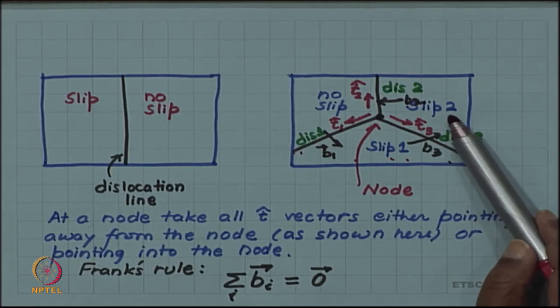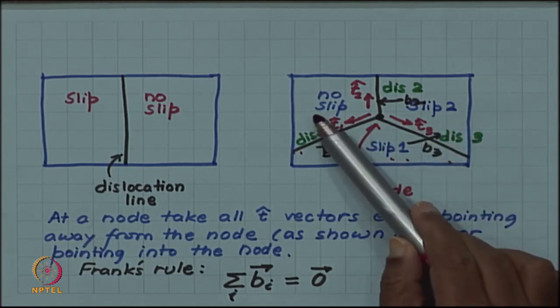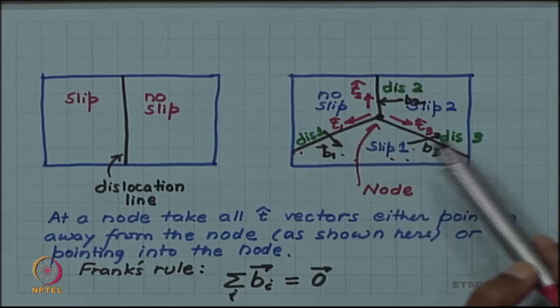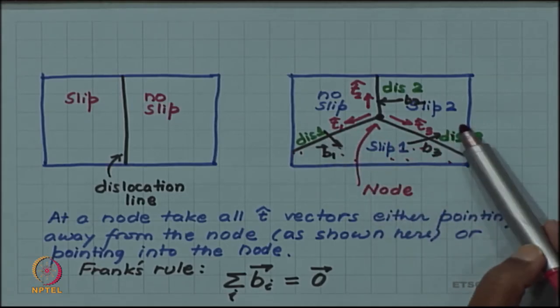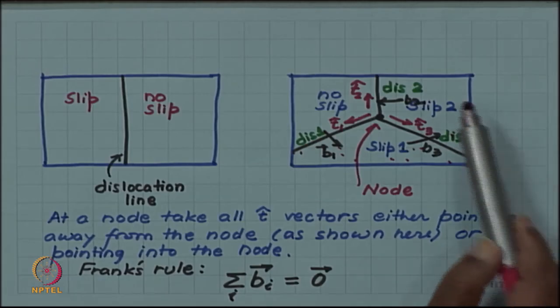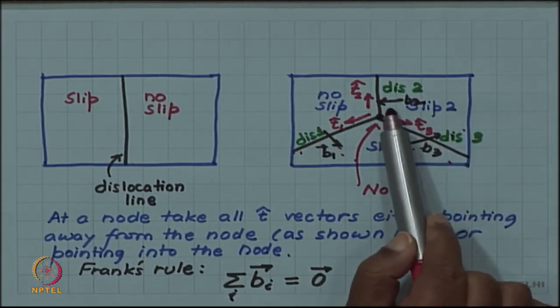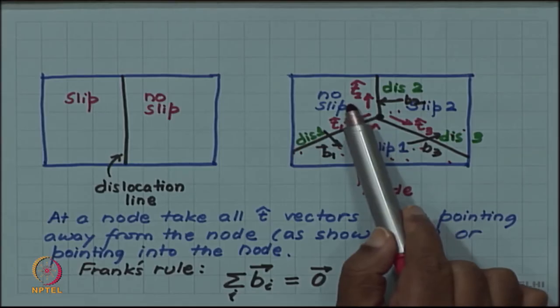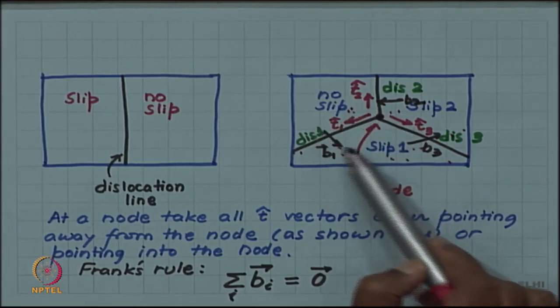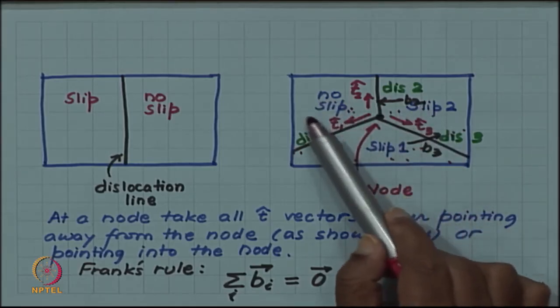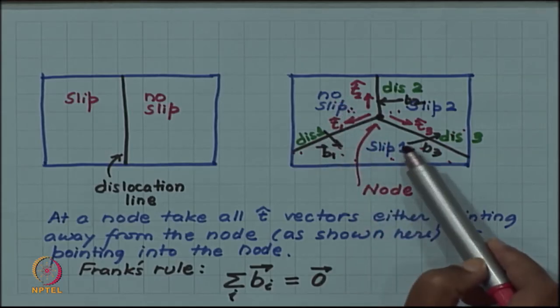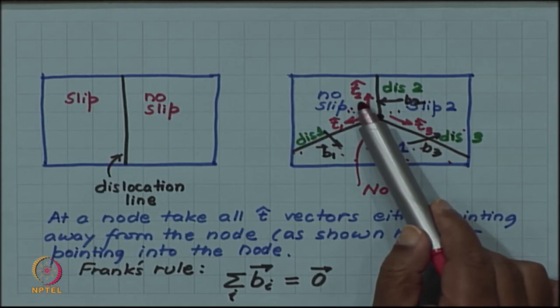The total slip of the region 2 with respect to the starting region which was no slip region is B1 plus B3. Now when I cross from this region to the no slip region I again undergo another slip which is now equal to the amount B2. So when I come back to original no slip region I have undergone a slip B1 plus slip B3 plus slip B2.